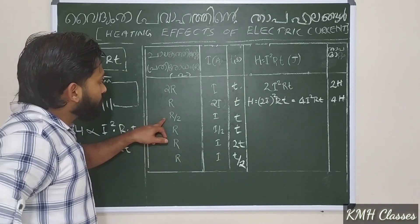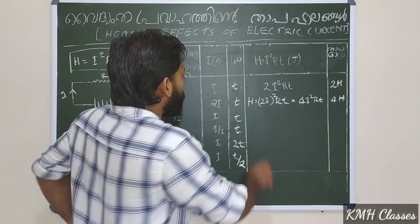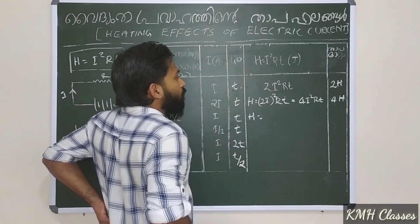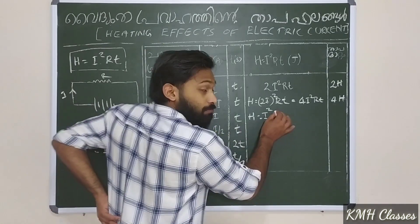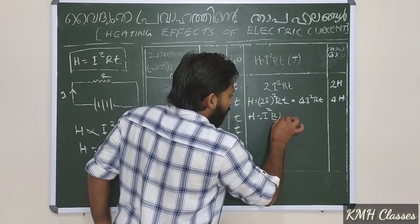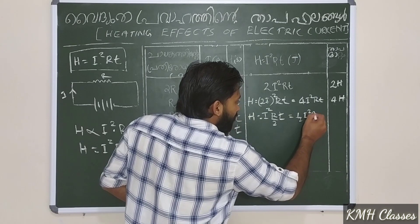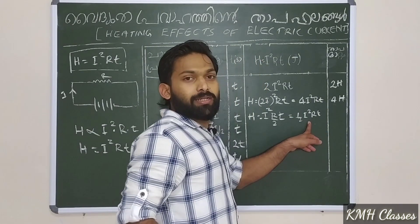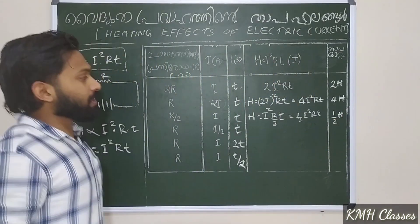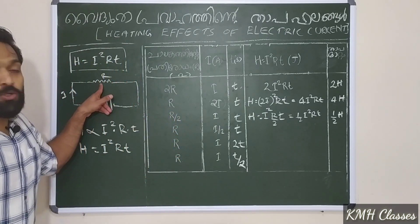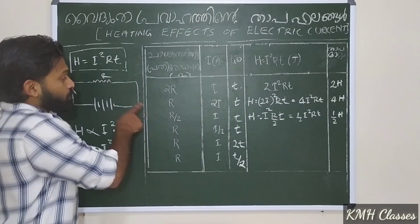Now I'll add R to R. H is equal to I squared R T. With R divided by 2, we get I squared R by 2 into T, which is one half I squared R T. So H by 2 — resistance in the circuit is equal to H/2.